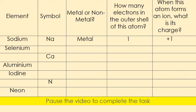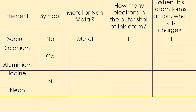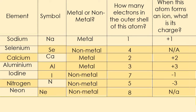Welcome back — you should now have completed your table and it should look like this. You may want to pause the video to check your answers. You'll notice that for selenium and for neon they do not form an ion because they are already stable. Selenium has four electrons in its outer shell so it won't gain or lose electrons, and neon already has a full outer shell of eight electrons.